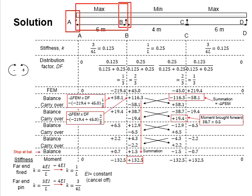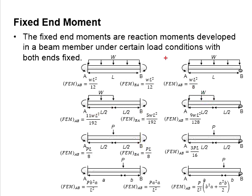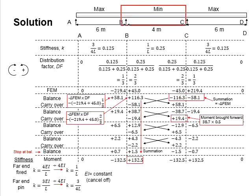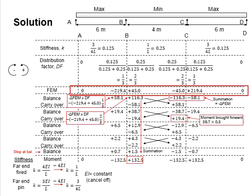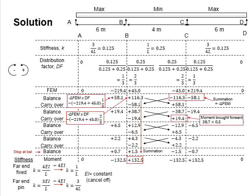Next, we determine the fixed end moments. For the end span, the end support is pinned and the intermediate support is fixed, subjected to a uniformly distributed load, so the corresponding equation is used. For the intermediate span, both ends are fixed with a uniformly distributed load, and the fixed end moment equation for that condition is applied. Substituting the relevant values gives the fixed end moments as listed. Positive sign indicates counterclockwise moment and negative indicates clockwise.